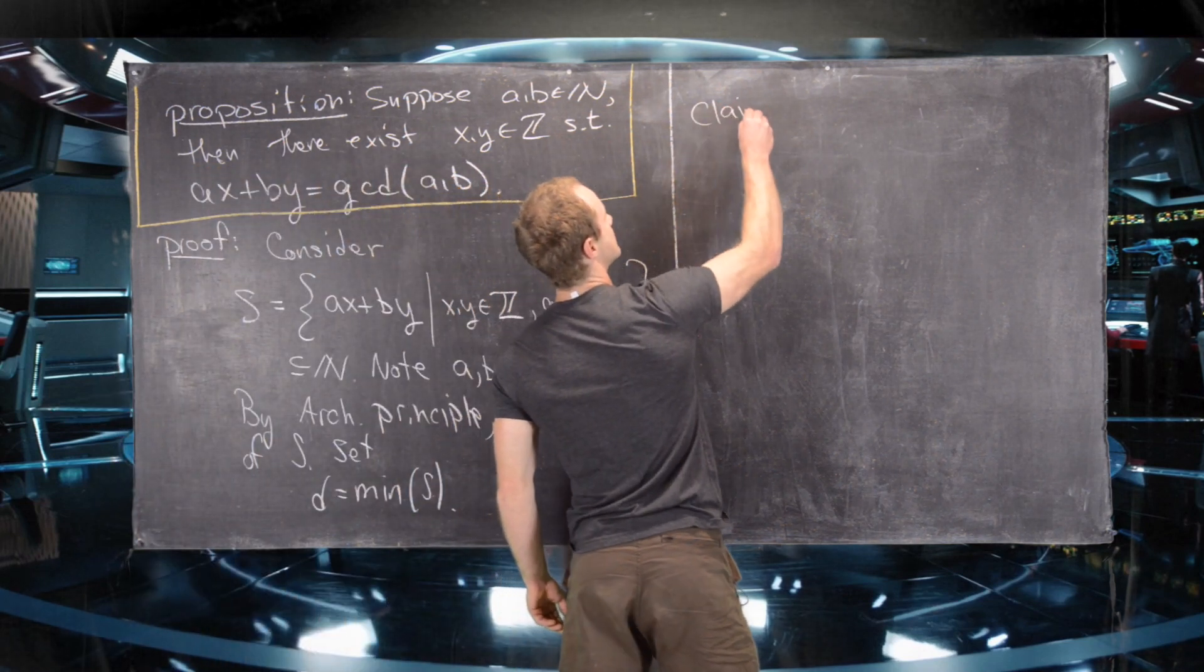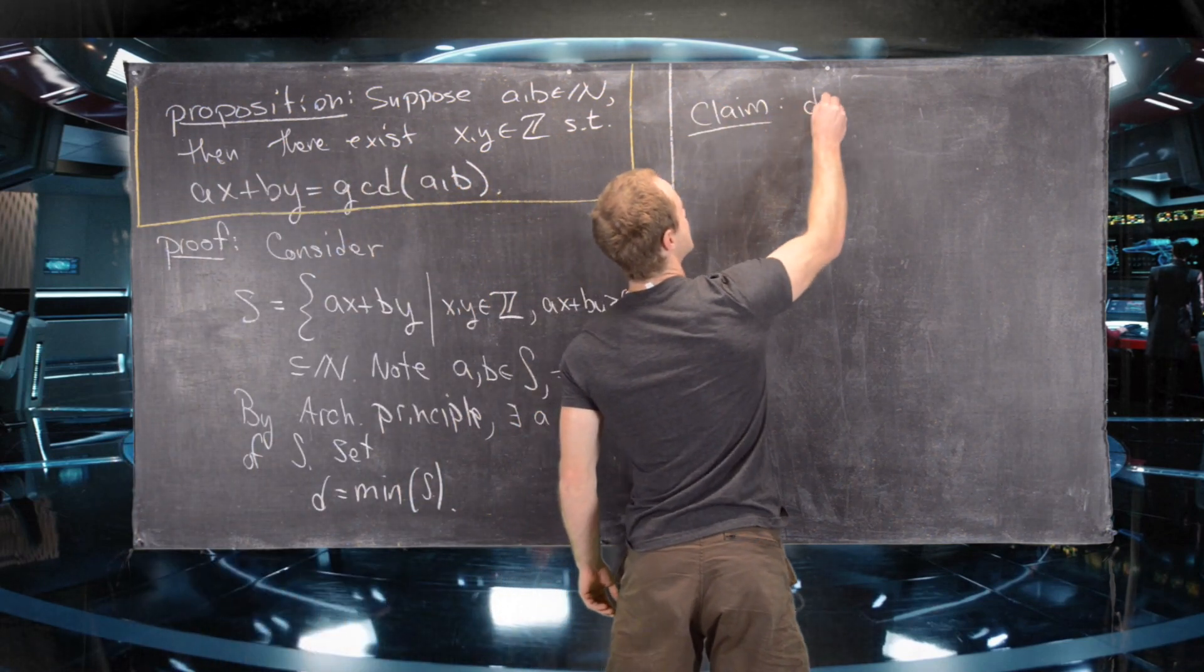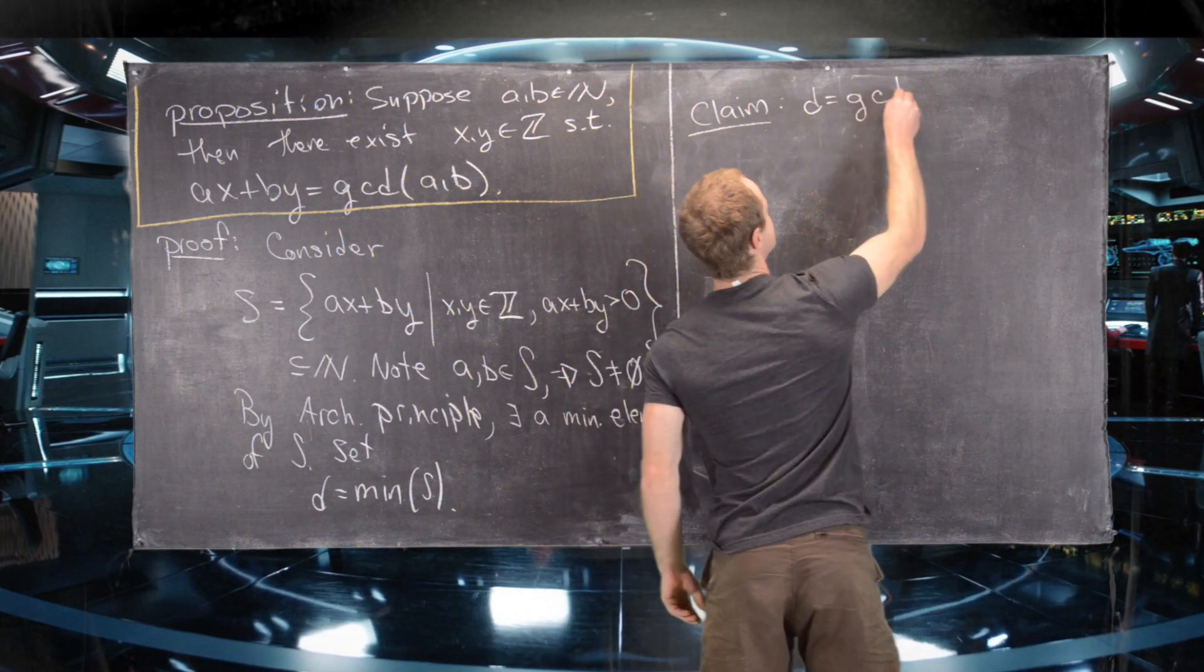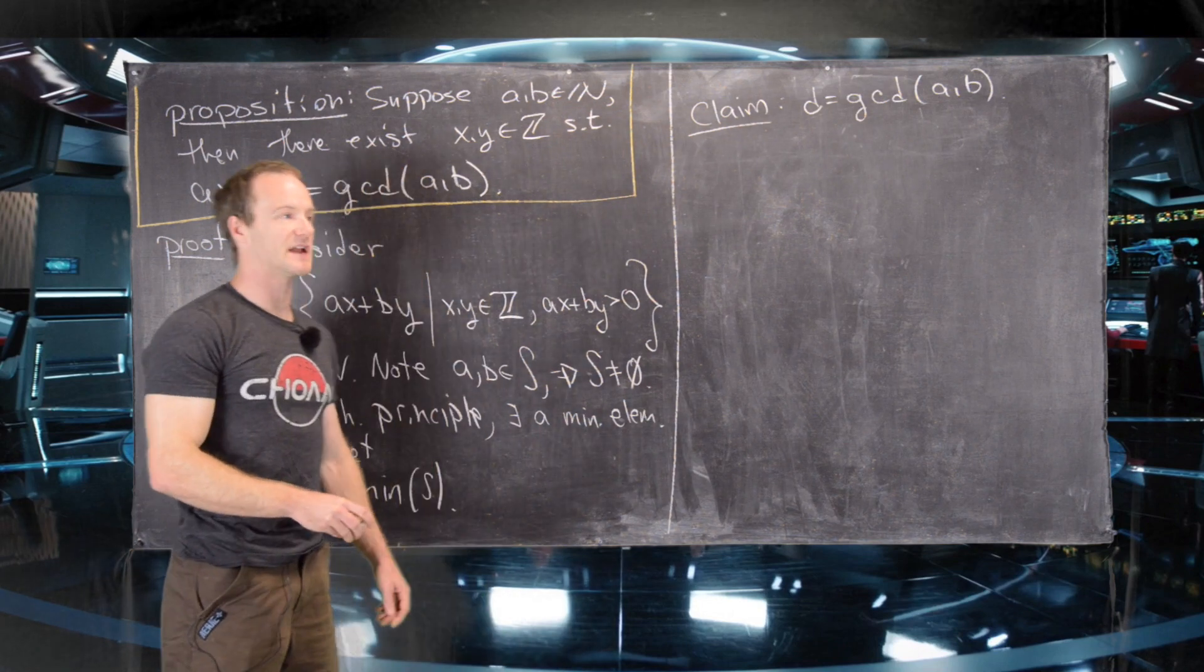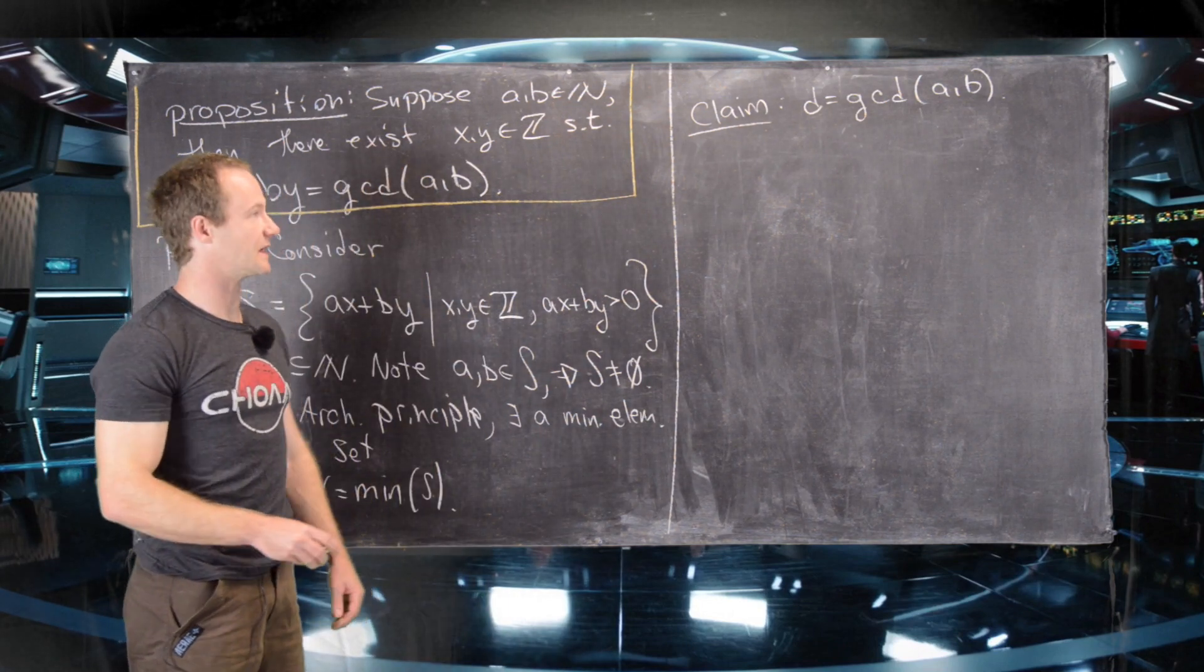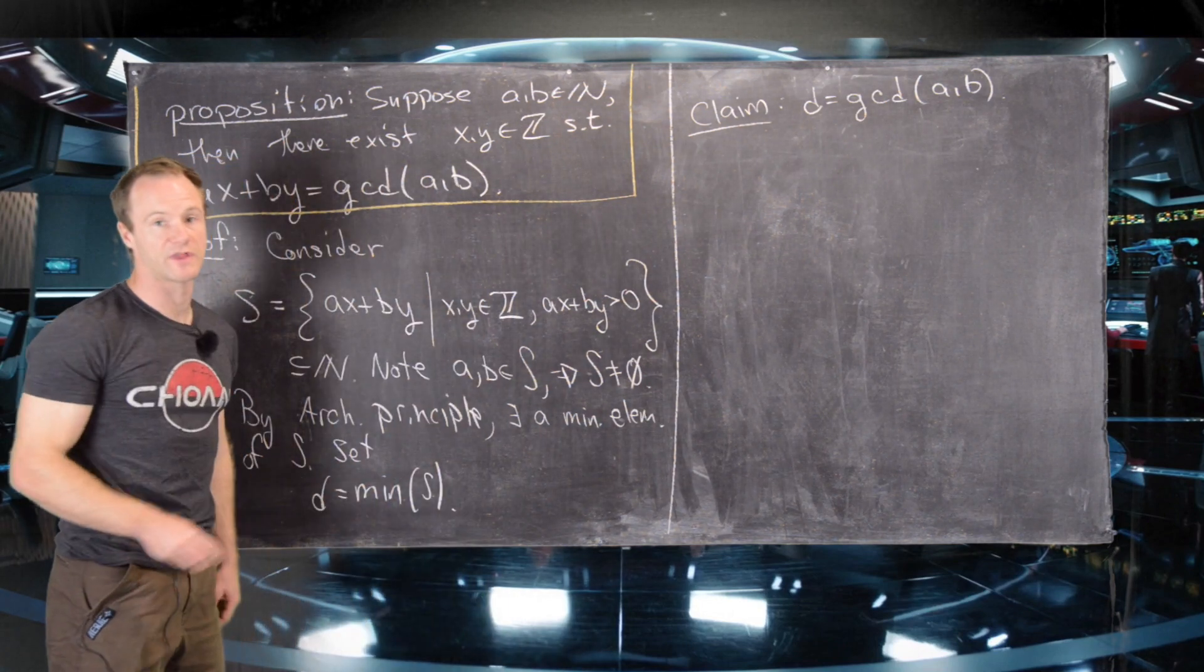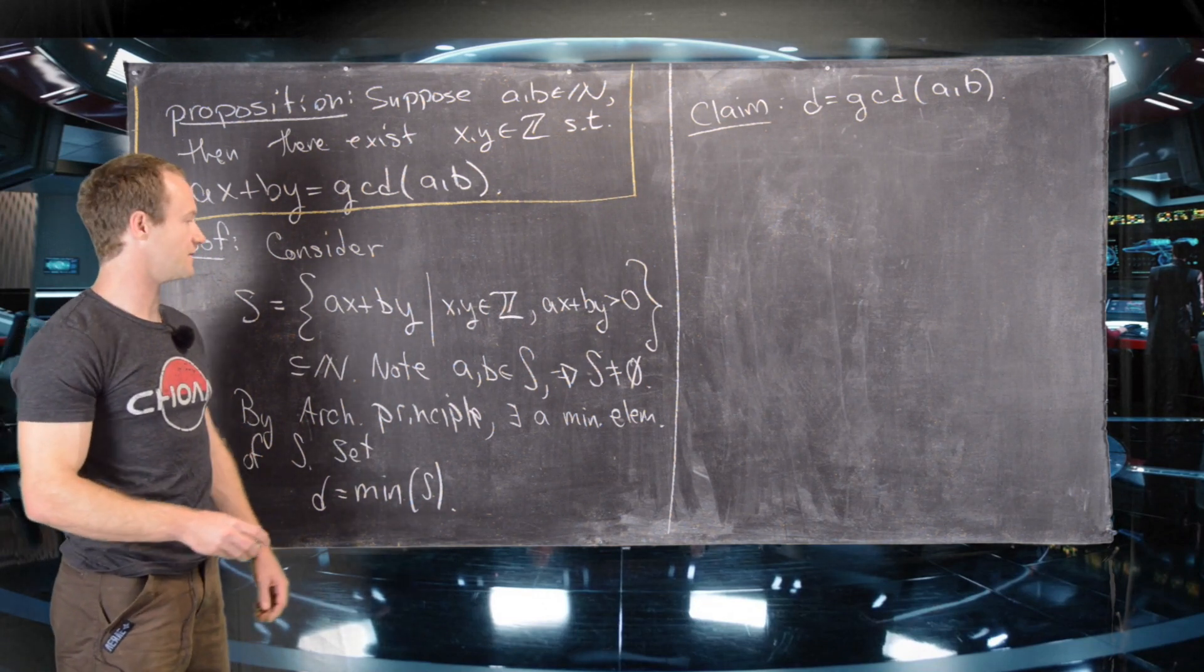So now what we need to do is claim that D is, in fact, the GCD of A and B. So first we'll show that it's a common divisor of A and B, and then we'll show that it's the greatest such common divisor of A and B.